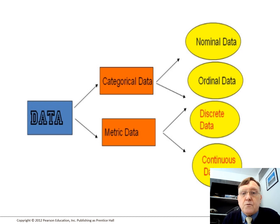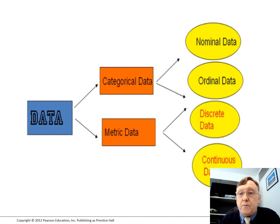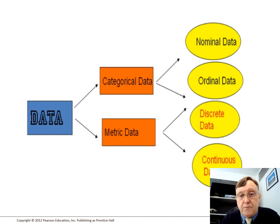So as we can see, data is divided into categorical and metric, and they are further divided into nominal and ordinal for the categorical, and discrete data and continuous data for the metric.